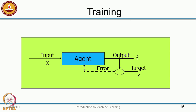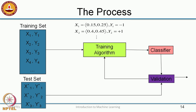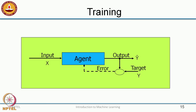Inside the training algorithm there is a learning agent which takes an input, produces an output y-hat which it thinks is correct, and then compares it against the actual target y given in the training. It figures out what the error is and uses the error to change the agent so it can produce the right output next time. This is essentially an iterative process — see the input, produce y-hat, compare to target y, figure out the error, and use the error to change the agent again. This is broadly how most classification and regression algorithms operate.